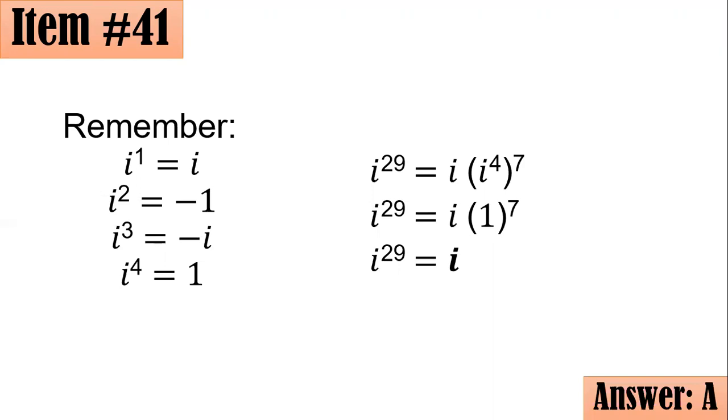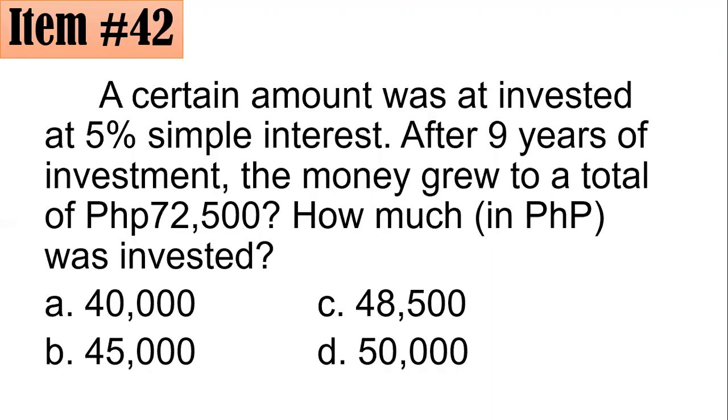Item number 42. A certain amount was invested at 5% simple interest. After nine years of investment, the money grew to a total of 72,500. How much in Philippine pesos was invested? Is it 40,000, 45,000, 48,500, or 50,000?